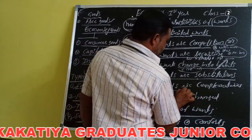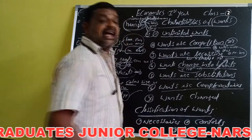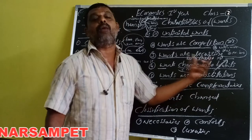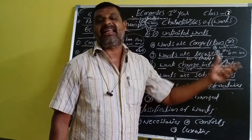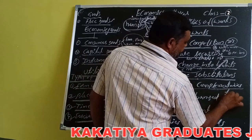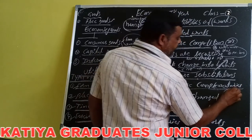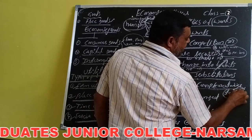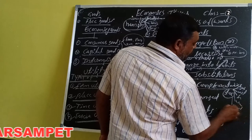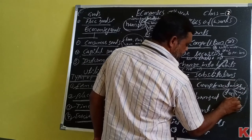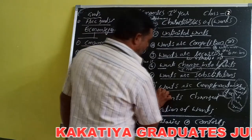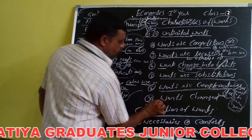Wants are complementary. To satisfy a single want, you may need more than one commodity. For example, to drink tea, you need sugar, milk, tea powder, water, and a bowl — more than one commodity is used to satisfy that single want.